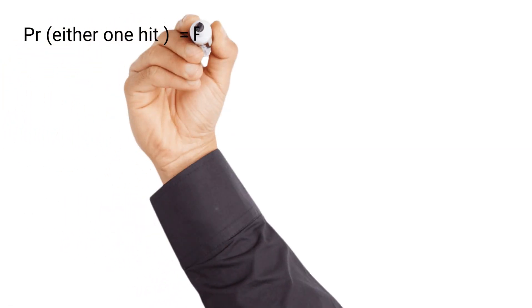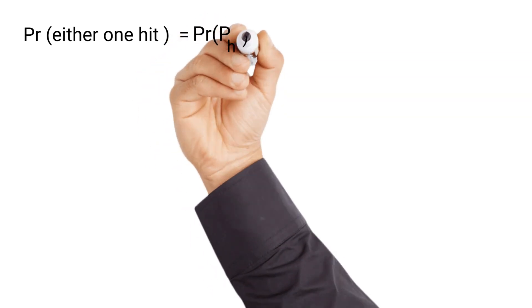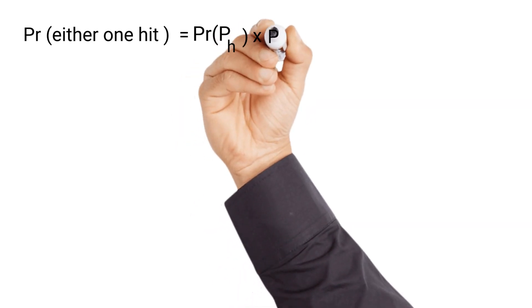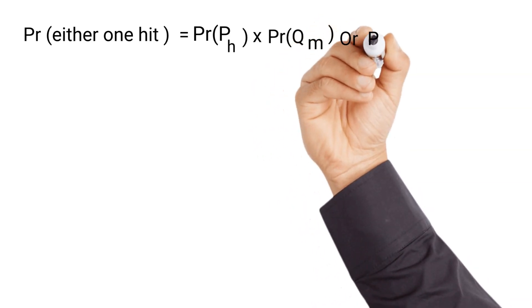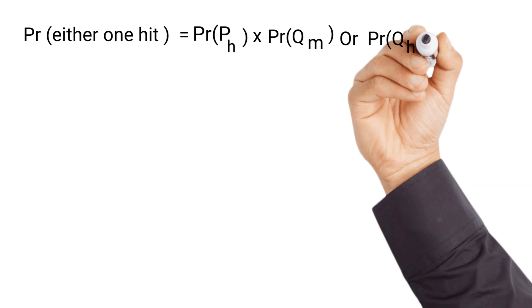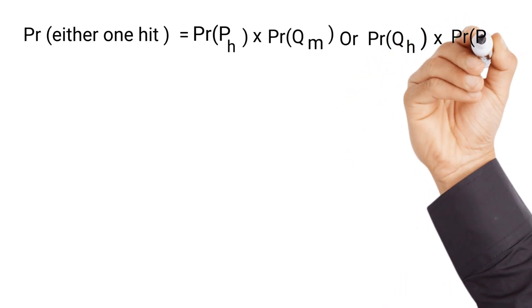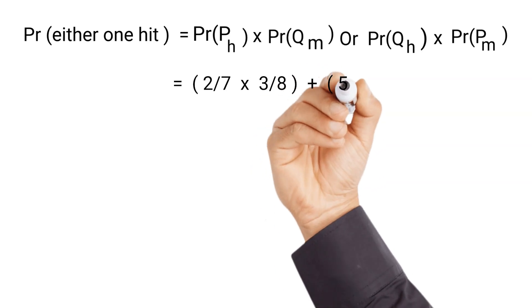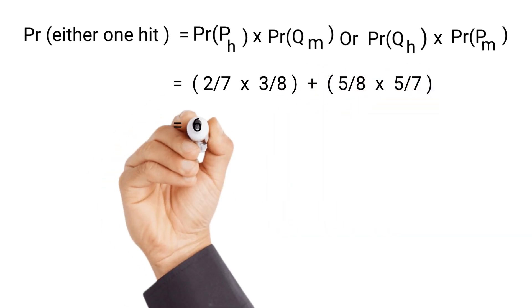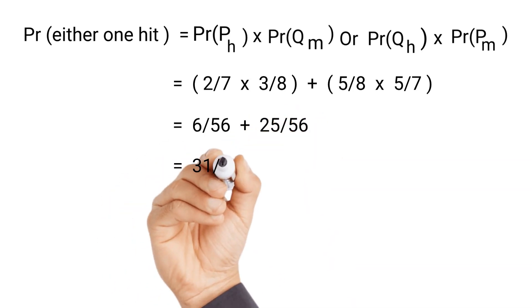For part c, the probability that either one hits the target means: P hits and Q misses, plus Q hits and P misses. Substituting our values: 2 over 7 times 3 over 8, plus 5 over 8 times 5 over 7. We get 6 over 56 plus 25 over 56, which gives 31 over 56 as our answer.